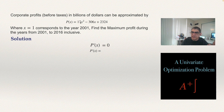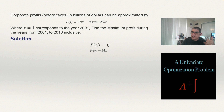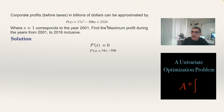Computing the derivative: the exponent 2 multiplies 17 to give 34, and the exponent reduces by one, giving 34x. For the next term, -306x, the derivative is -306. The last term, 2324, is a constant, so its derivative is zero. Thus, P'(x) = 34x - 306.